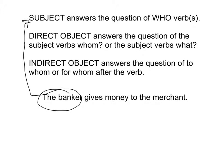If you want to find the direct object, you ask the subject verbs what. The banker gives what? When you ask that question, you'll see the answer is money — the banker is giving the money. Thus, the money is the direct object in the sentence.